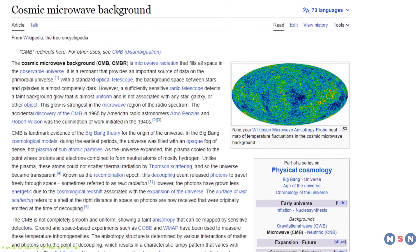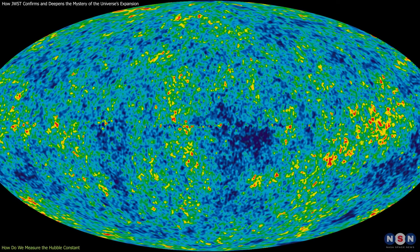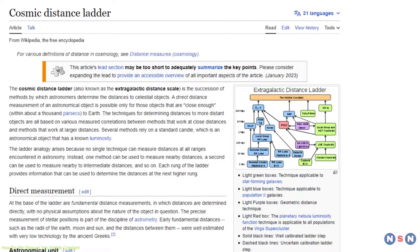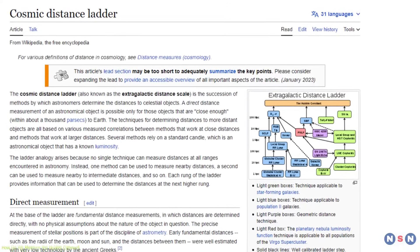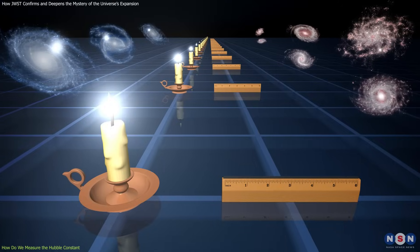There are two main methods of measuring distances in cosmology. One is based on the Cosmic Microwave Background, CMB, which is the relic radiation from the Big Bang, and the other is based on the Cosmic Distance Ladder, which is a series of steps that use different types of objects as standard candles or rulers.